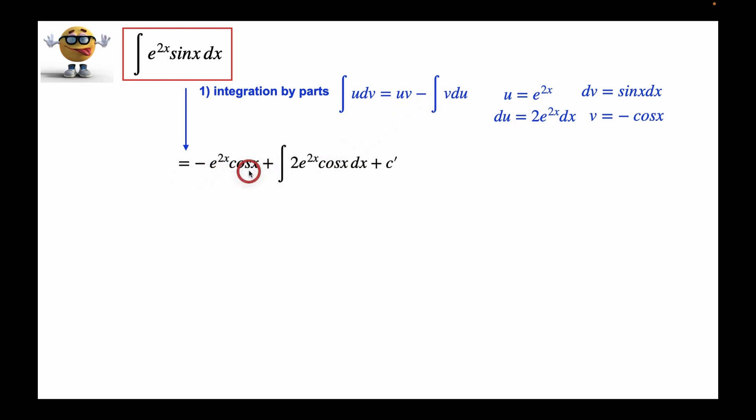This is what we get, so this is u times v right here, minus the integral of v du.